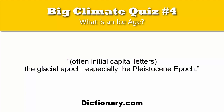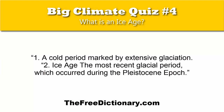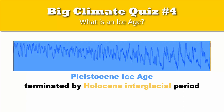Dictionary.com says: "Often initial capital letters, the glacial epoch, especially the Pleistocene epoch." The FreeDictionary.com says: "1. A cold period marked by extensive glaciation. 2. Ice Age — the most recent glacial period which occurred during the Pleistocene epoch." These definitions show a different picture of ice age as a continuous period of 2.6 million years, followed by the Holocene.